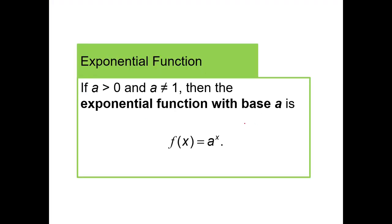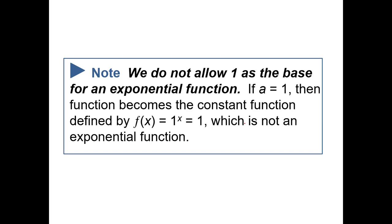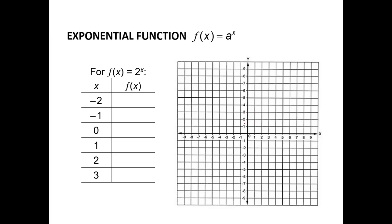Exponential function: if a is greater than 0 and a is not equal to 1, then the exponential function with base a is f of x equals a to the x. We do not allow 1 as the base because if a equals 1, the function becomes f of x equals 1, which is just a constant function — not an exponential function. Let's graph f of x equals 2 to the x as an example.